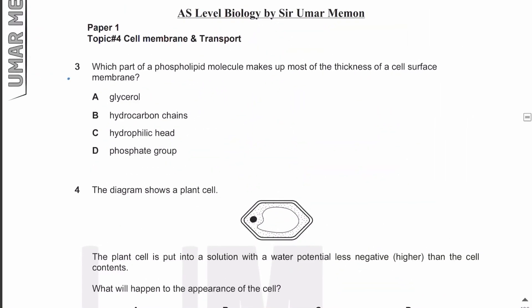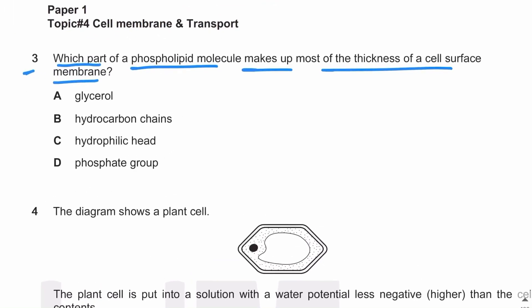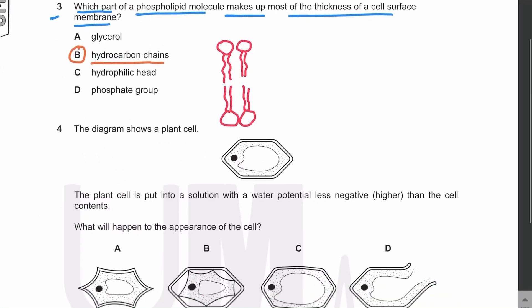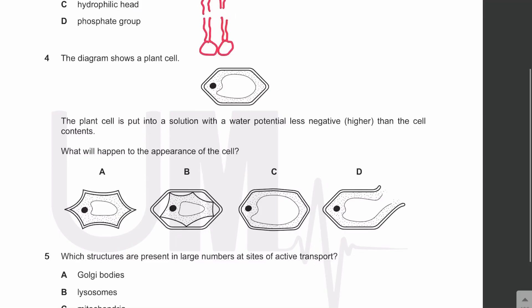MCQ number three: which part of the phospholipid molecule makes up most of the thickness of the cell surface membrane? The majority of the thickness of the cell surface membrane is due to the hydrophobic tails — or hydrocarbon tails — of the fatty acids. The answer is B, the hydrocarbon chains, which are the hydrophobic tails. MCQ number four: